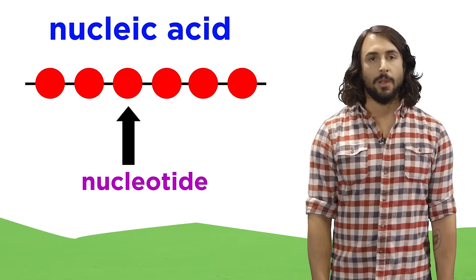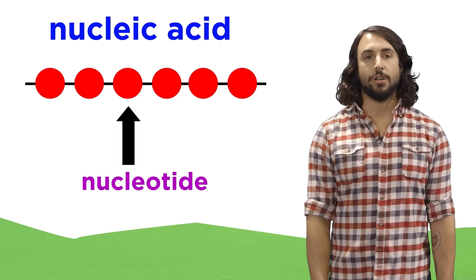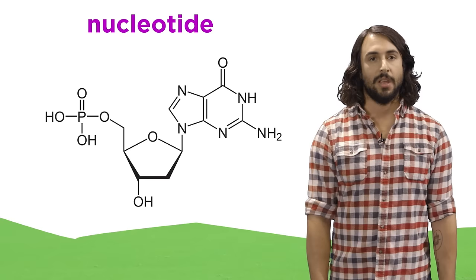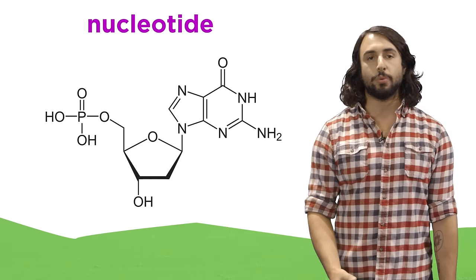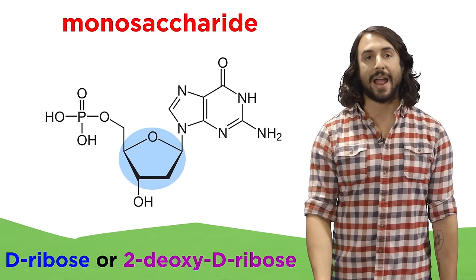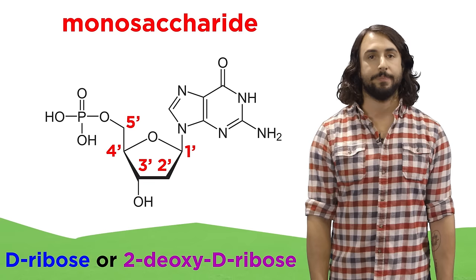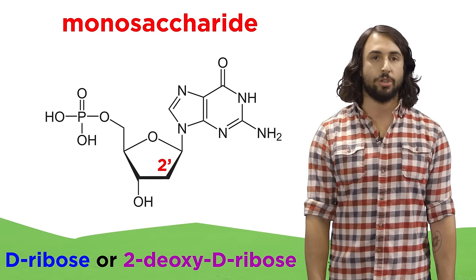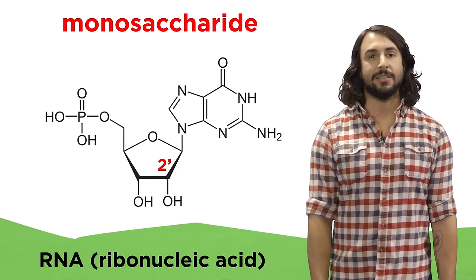Just like the other polymers we learned about, first we have to understand the monomers they are comprised of, so let's take a look at nucleotides. A nucleotide is a molecule that has three sections. First there is a monosaccharide, which is always either D-ribose or 2-deoxy-D-ribose, and we can number the carbons one prime through five prime. The difference between these has to do with the presence or absence of a hydroxyl on carbon two, and these sugars will specifically occur in RNA or ribonucleic acid, and DNA or deoxyribonucleic acid, respectively.